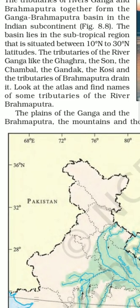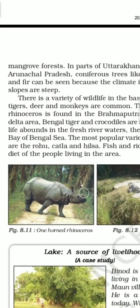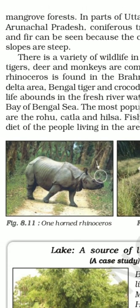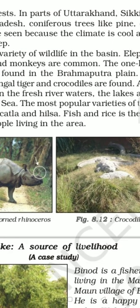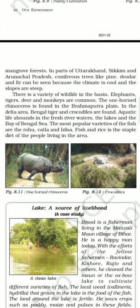In the Ganga-Brahmaputra Basin you find plains, mountains, and forests. The Yamuna River — visible behind the Taj Mahal — is a tributary of the Ganga. Tourists visit that area, and you find animals like rhinoceroses. The staple food of people living in these areas is fish and rice — unlike Amazon Basin people, they do not eat insects.